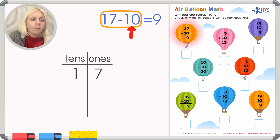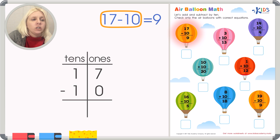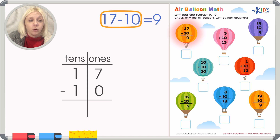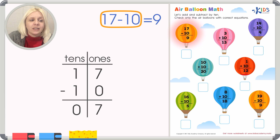The number 17 has seven ones and one group of tens. Then we plug in 10: one ten and zero ones. Solving vertically, we start with the ones column — seven minus zero equals seven. Then the tens column: one minus one equals zero. So zero-seven is just seven. Therefore, 17 minus 10 equals seven.